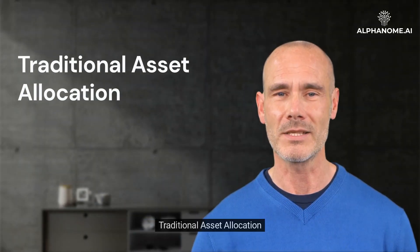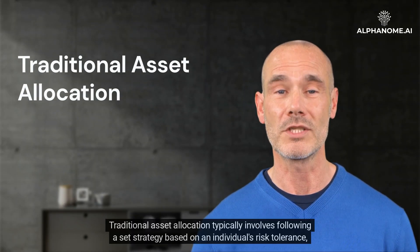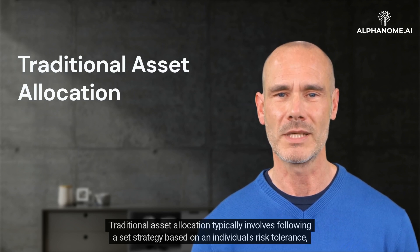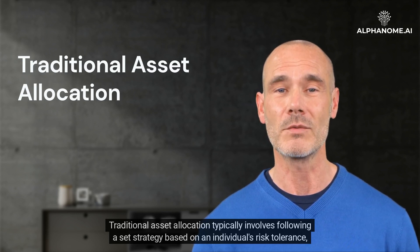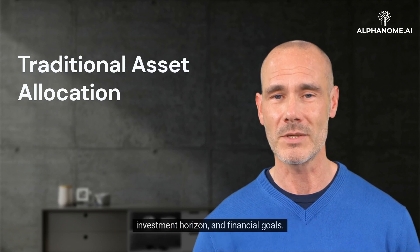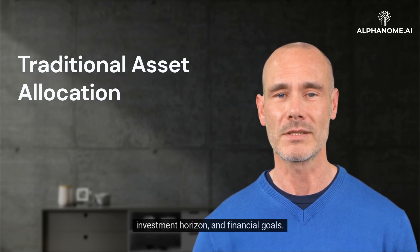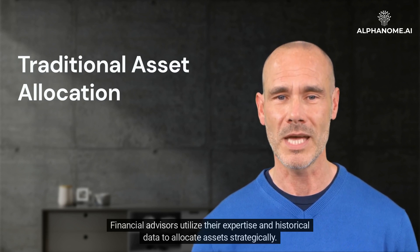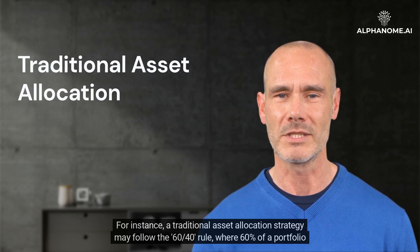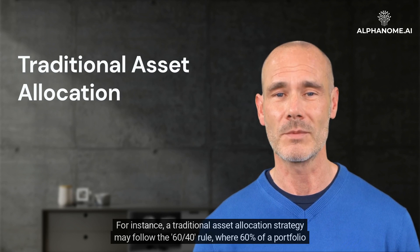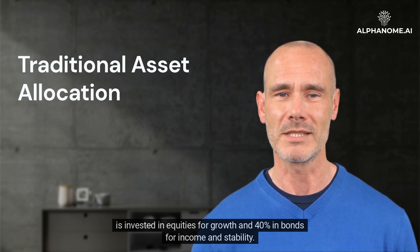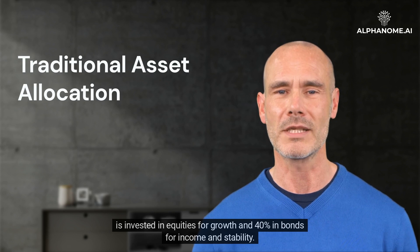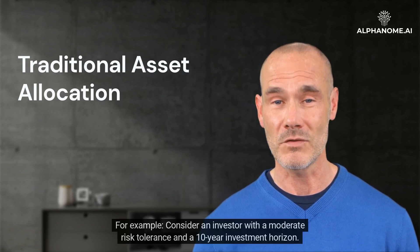Traditional Asset Allocation. Traditional asset allocation typically involves following a set strategy based on an individual's risk tolerance, investment horizon, and financial goals. Financial advisors utilize their expertise and historical data to allocate assets strategically. For instance, a traditional asset allocation strategy may follow the 60-40 rule, where 60% of a portfolio is invested in equities for growth and 40% in bonds for income and stability.